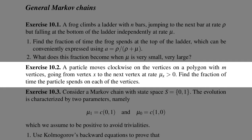In this exercise we assume that there is a particle moving clockwise on the vertices of a polygon with n vertices, so the sequence of states visited by the particle is in fact deterministic. But the time at which the particle jumps is random — we assume the particle jumps from state x to the next vertex at some rate μ_x, which depends on the vertex. The goal is to find the fraction of time the particle spends on each of the vertices.